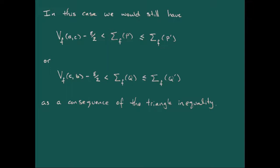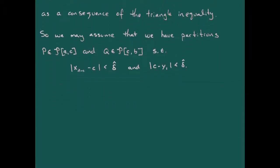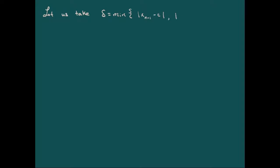So we may as well assume that both partitions are arranged so that x_{n−1}, the last point in p before c, is within a distance of delta-hat of c, and likewise y_1 is within a distance of delta-hat from c. Since we're talking about continuity, we've assumed f is continuous at c, and we want to show that the total variation function v is also continuous at c. So we need to find a delta. The delta we choose is the minimum of |x_{n−1} − c| and |c − y_1|.